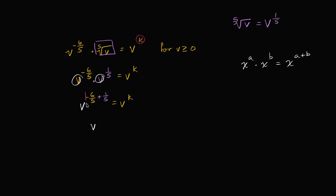So all of this is going to be equal to negative one. And that's going to be equal to v to the k. So k must be equal to negative one. And we're done. And k is equal to negative one.